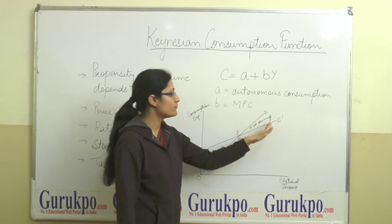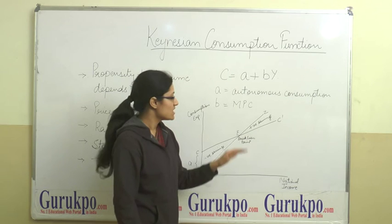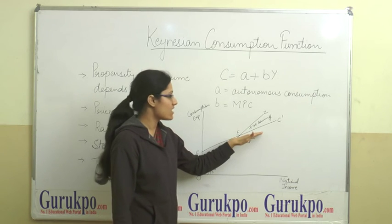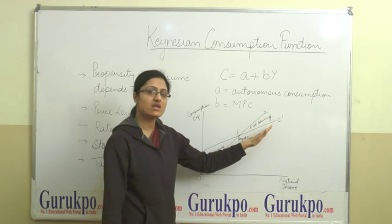Now after point E we have positive savings because after point E the level of income is greater than our consumption level. Therefore we are able to save.